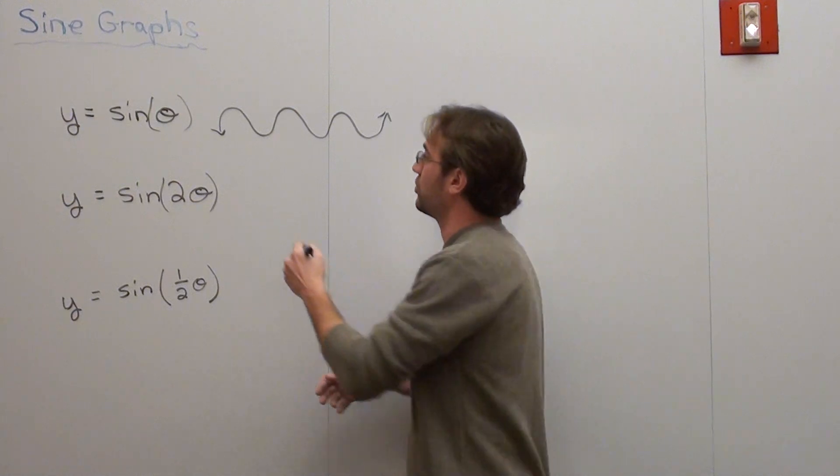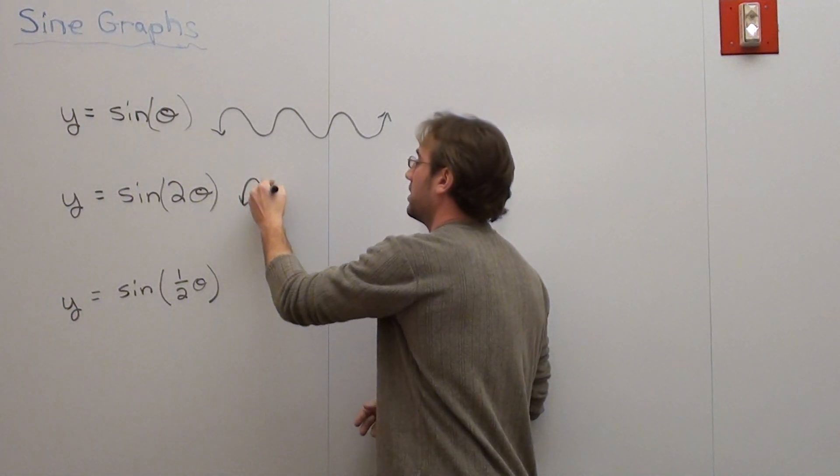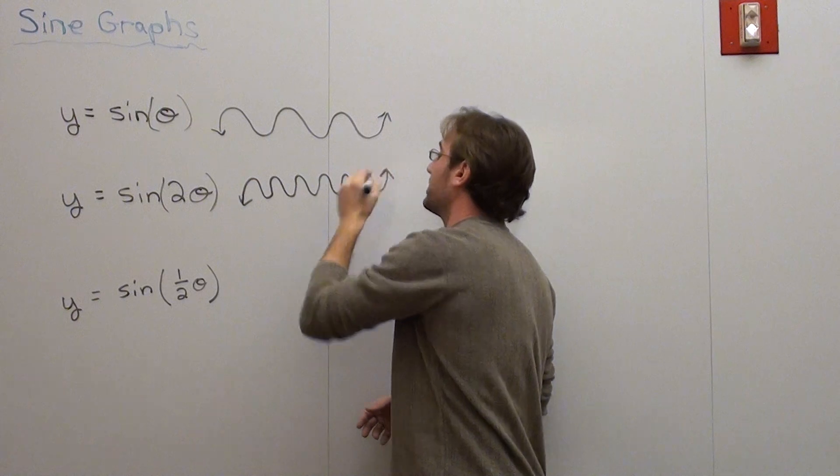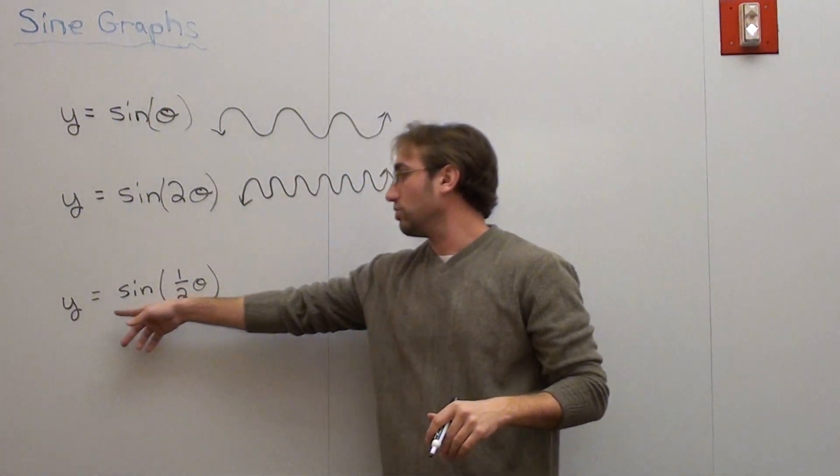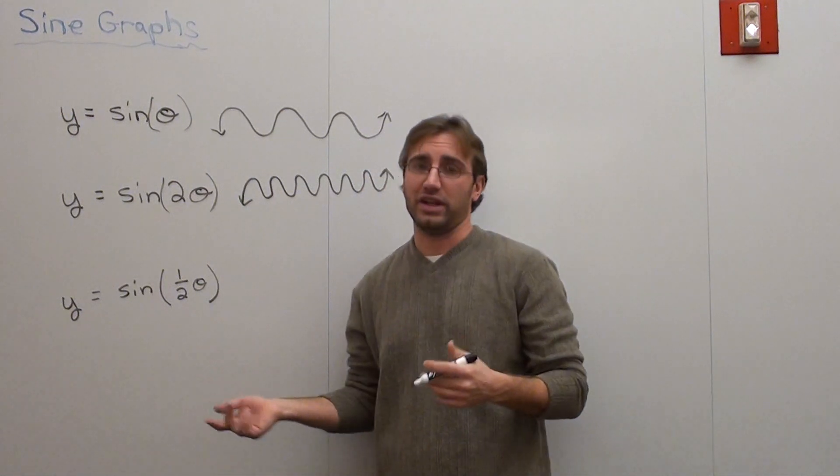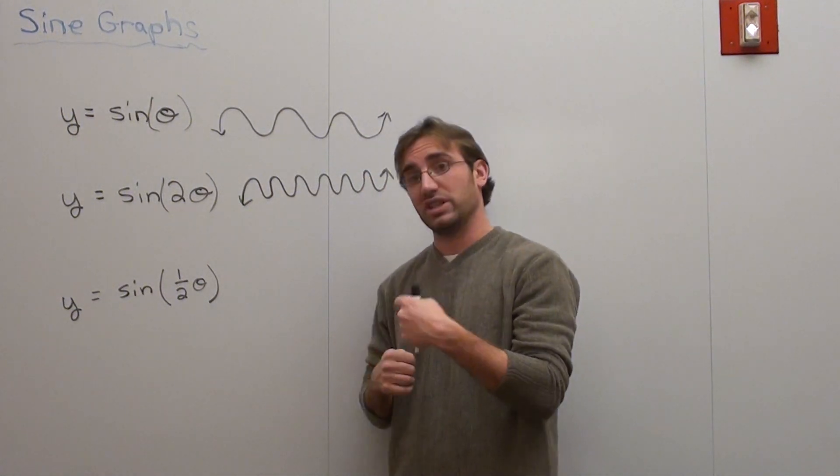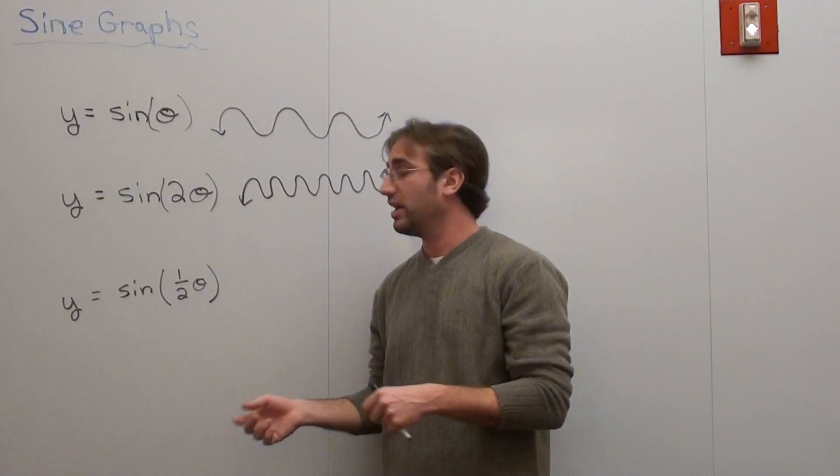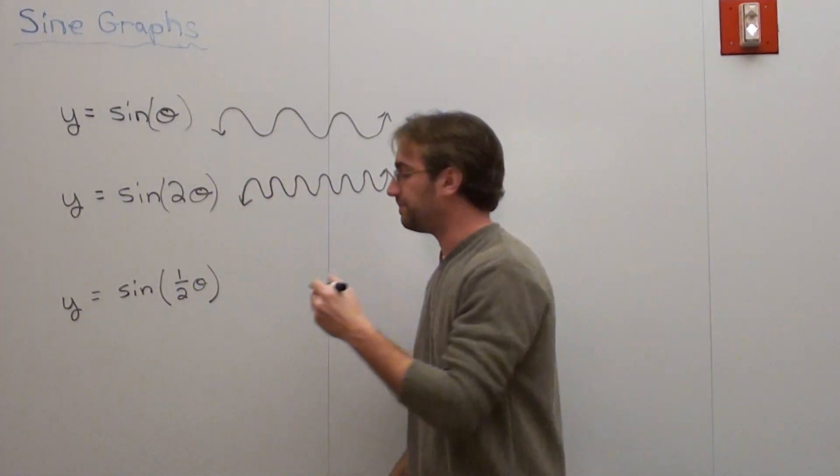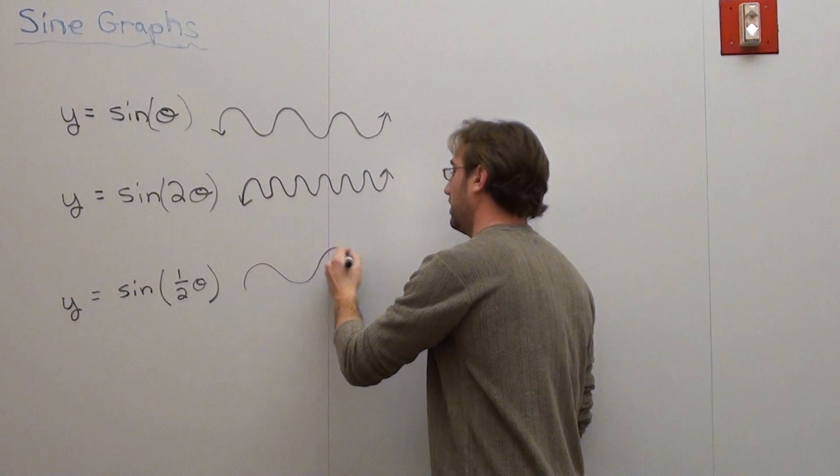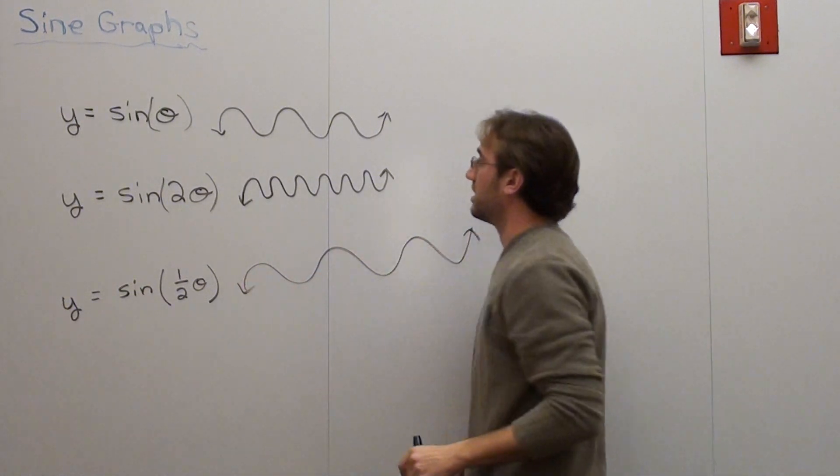Basically what happens is the graph is the same except it becomes more squished. And when I do this one, y equals sine of 1 half theta, I'm reducing the angle that's being put in, and it just expands—it's like somebody stretches it like an accordion. It looks like this, and it's really cool.